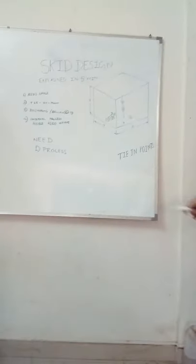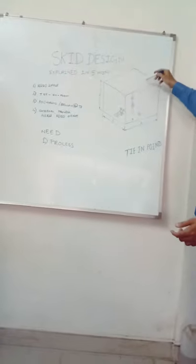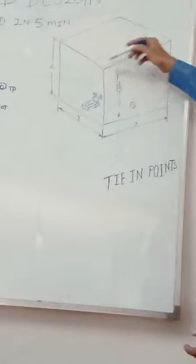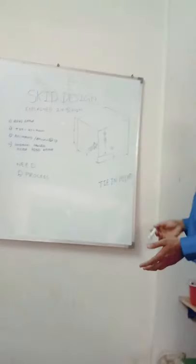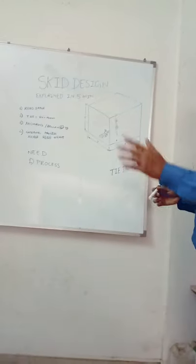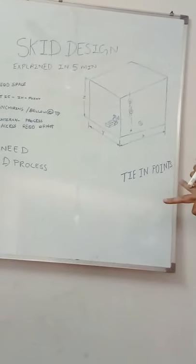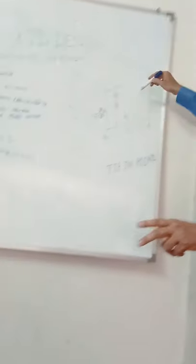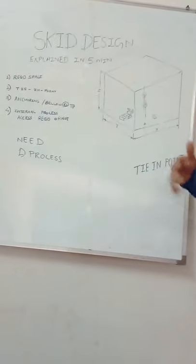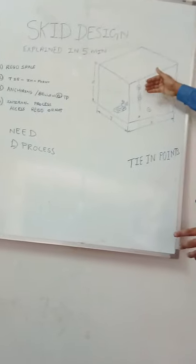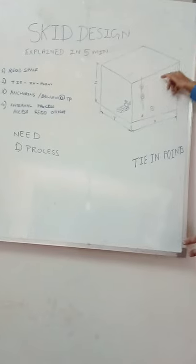The fourth point, which is the internal process. The internal process, we have to design all the layout, general arrangement for the entire process. It will include receivers, pumps, filters, whatever it may be which is there in the P&ID. Second important thing is that there may be two types. One is that the entire skid doesn't require entry—whatever operational valves and pressure gauges will be there near the tie-in locations, so you need not have to enter inside the skid space.